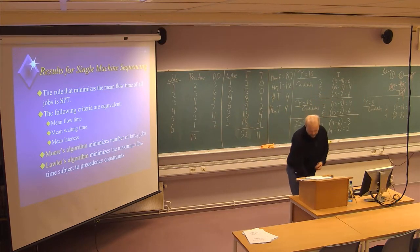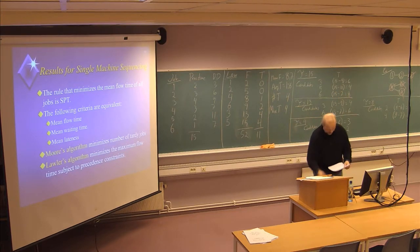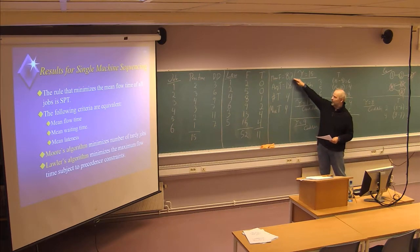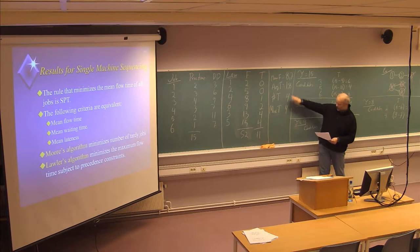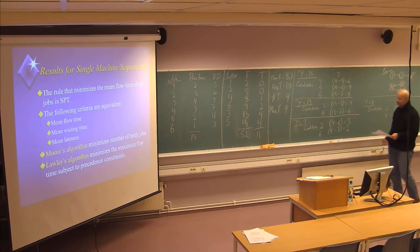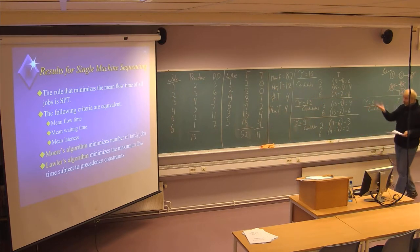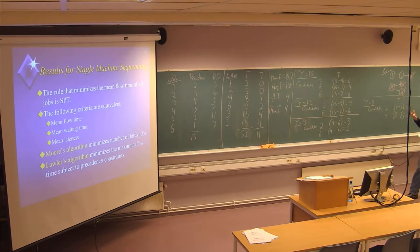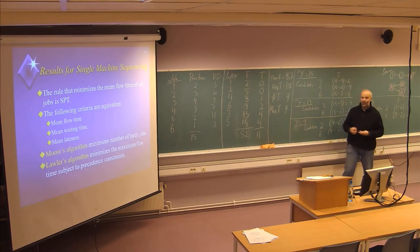Comparing with the first-come-first-serve sequence on the same example: mean flow time was 9.5, average tardiness was 2.67, and maximum tardiness was 8 compared to 4. However, the number of tardy jobs with FCFS was only 3, while here we have 4 tardy jobs. So we have more jobs that are delayed, but the delays are much smaller. If minimizing maximum tardiness is the objective, the sequence formed by Lawler's algorithm is better than the first-come-first-serve sequence.